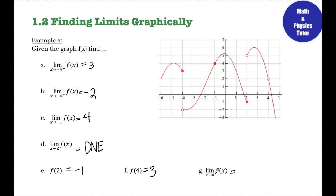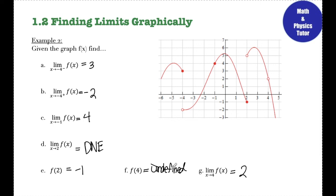Part g: the limit as x approaches 4. Here's x equals 4 — my y value is 2, so the limit is 2. Even though this is an open circle — a removable discontinuity — the y values are still approaching the same thing from the left and from the right. So the limit as x approaches 4 is 2. That's it for finding limits graphically.